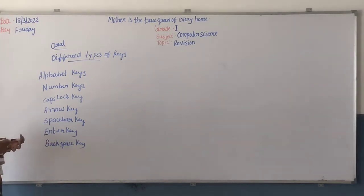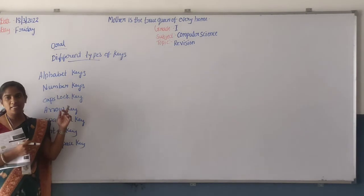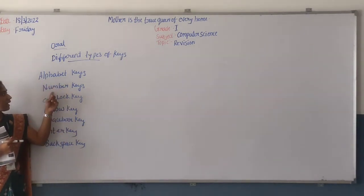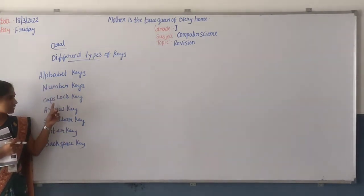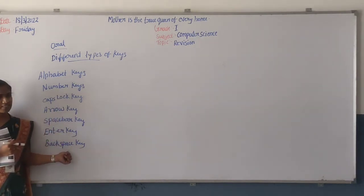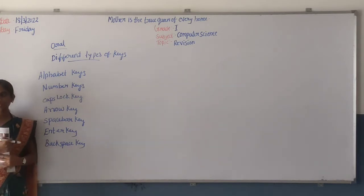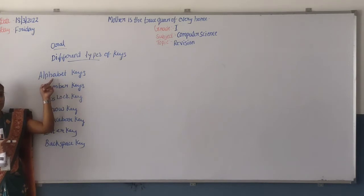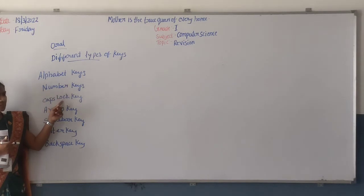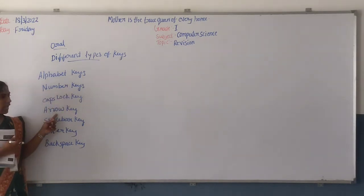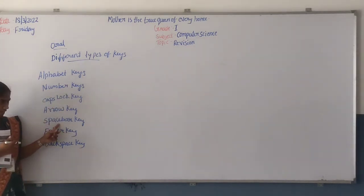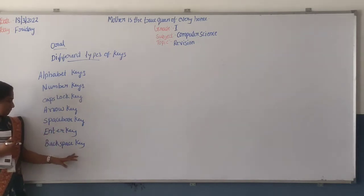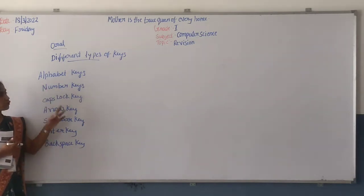These are the different types of keys in keyboard: alphabet keys, number keys, backslash keys, arrow keys, space bar keys, end key, backspace keys. These are the different types of keys in keyboard: alphabet keys, number keys, backslash keys, arrow keys, space bar keys, enter keys, backspace keys. This is the oral, ok.